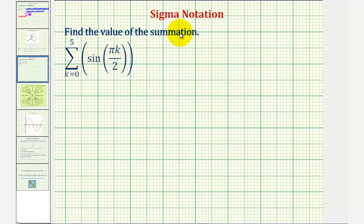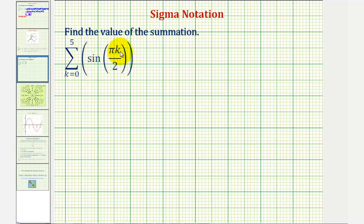We want to find the value of the summation, where this notation is called sigma notation or summation notation. Each value that we sum will be determined by this expression — the sum of sine of pi times k divided by two. We'll notice how the value of this is determined by the value of k, where k is the index variable.